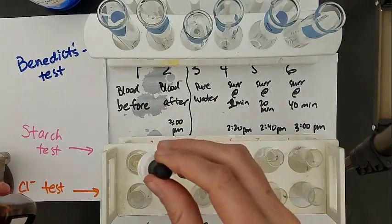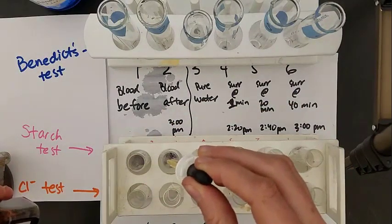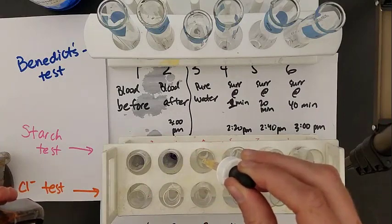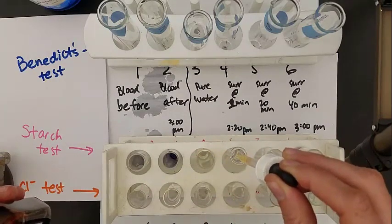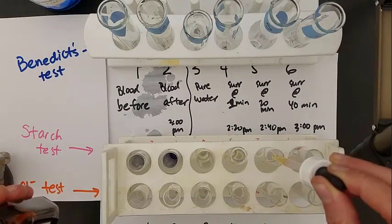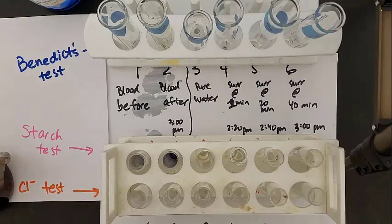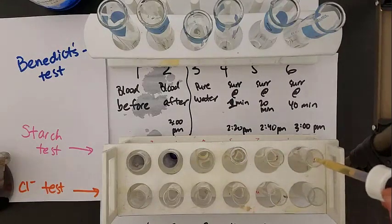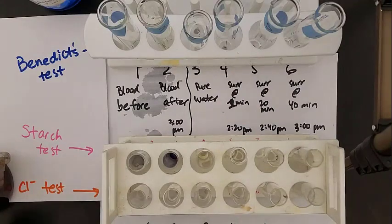The iodine test is for starch, and it will turn purple if starch is present. You can see that the first two, the blood samples, both turn purple, so there must be starch in there. We'll take a closer look in a second.